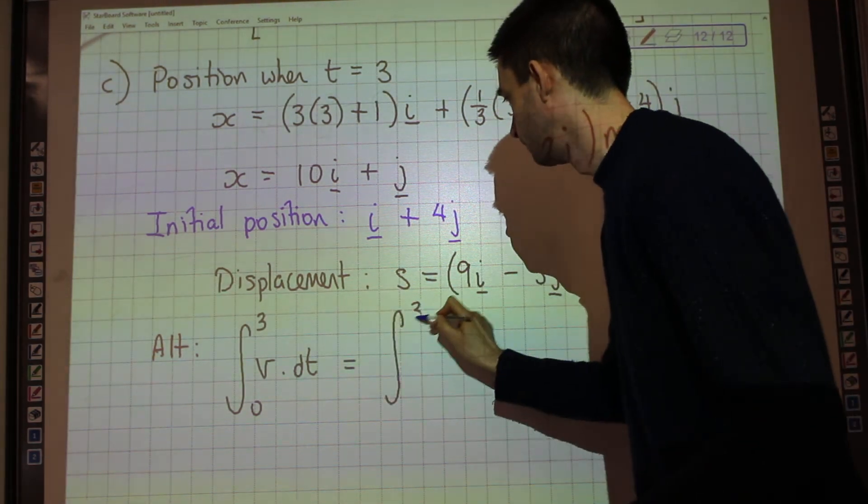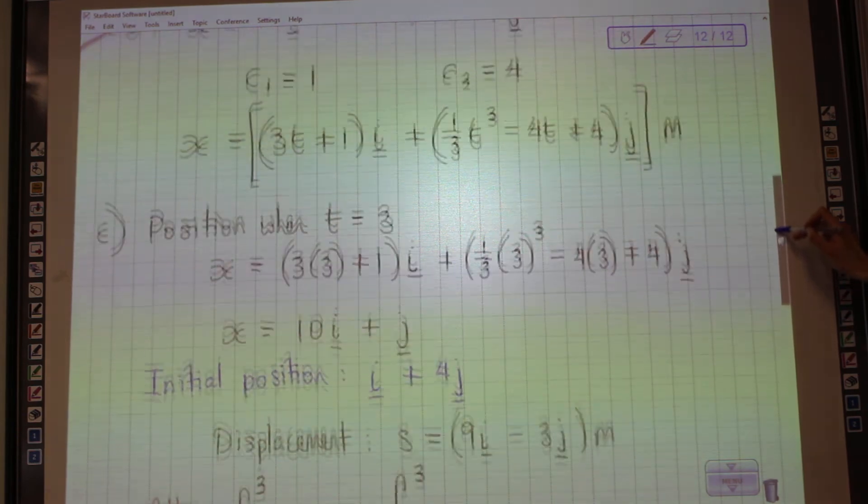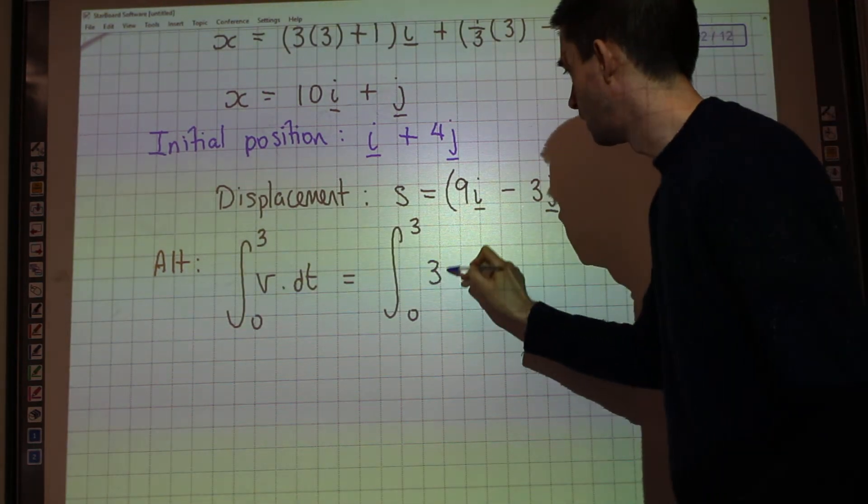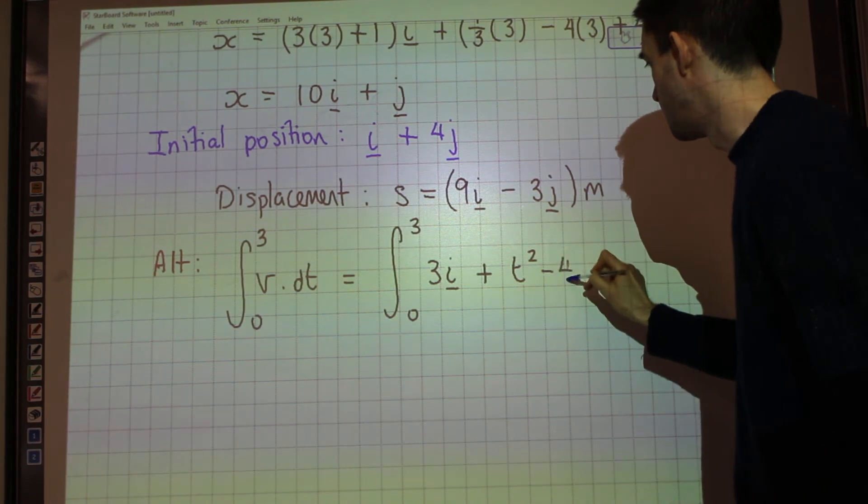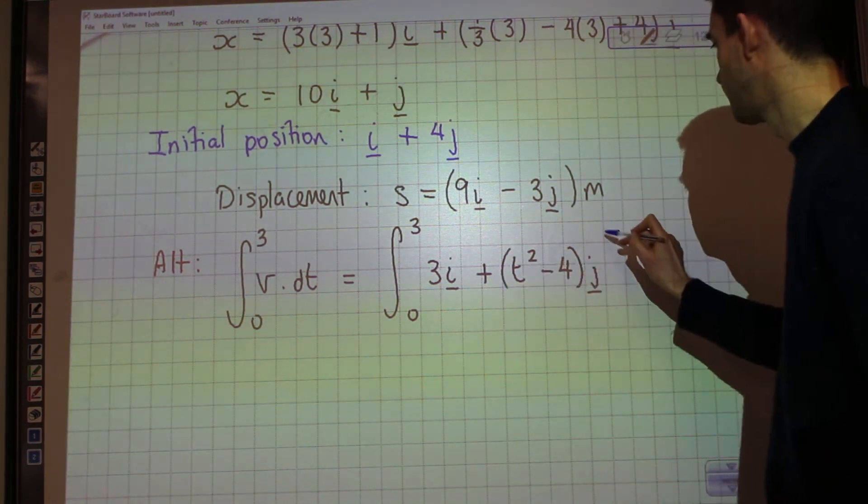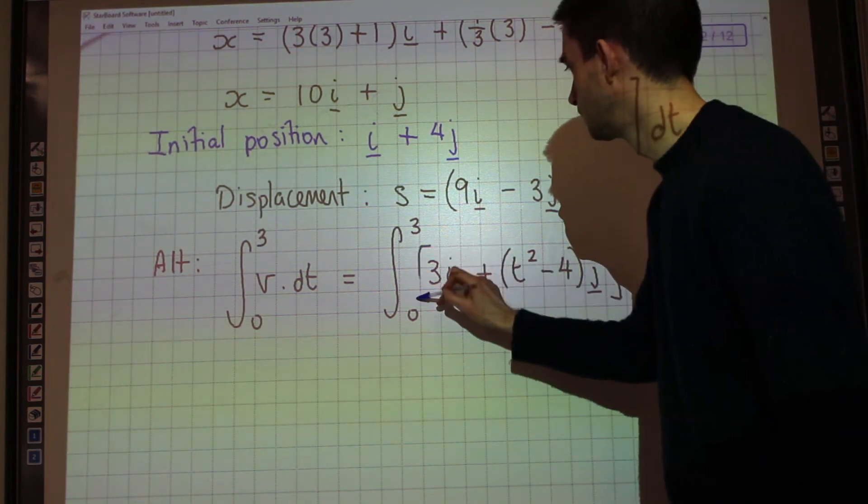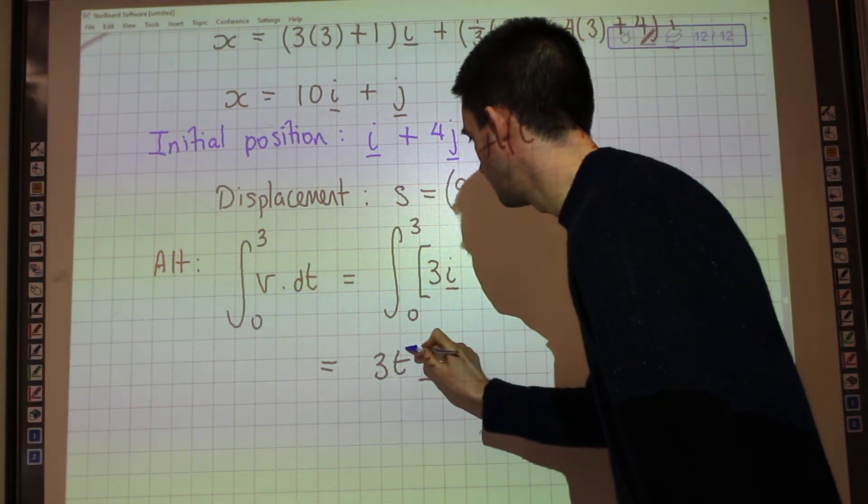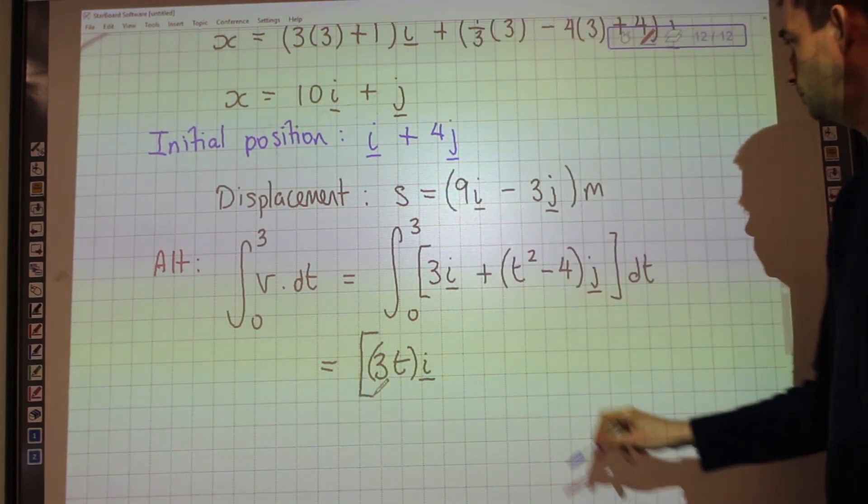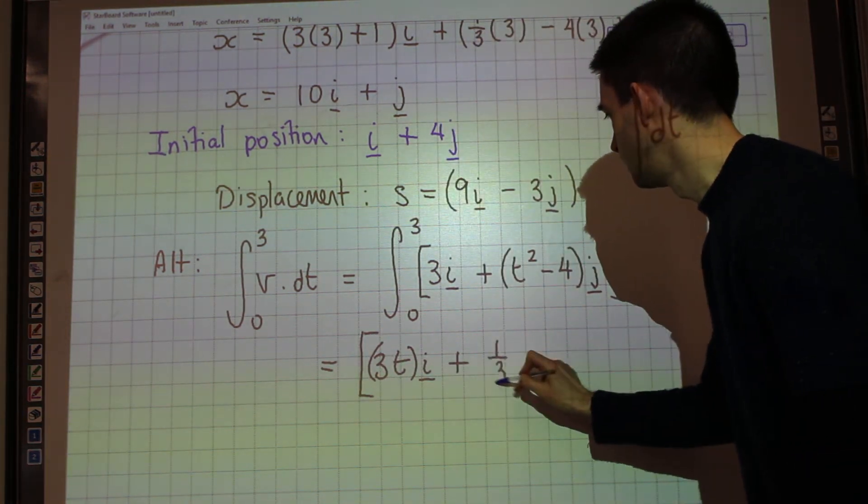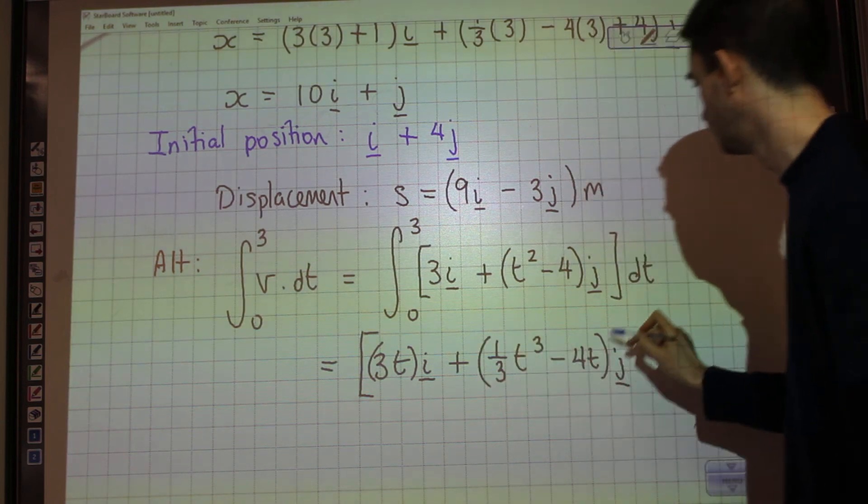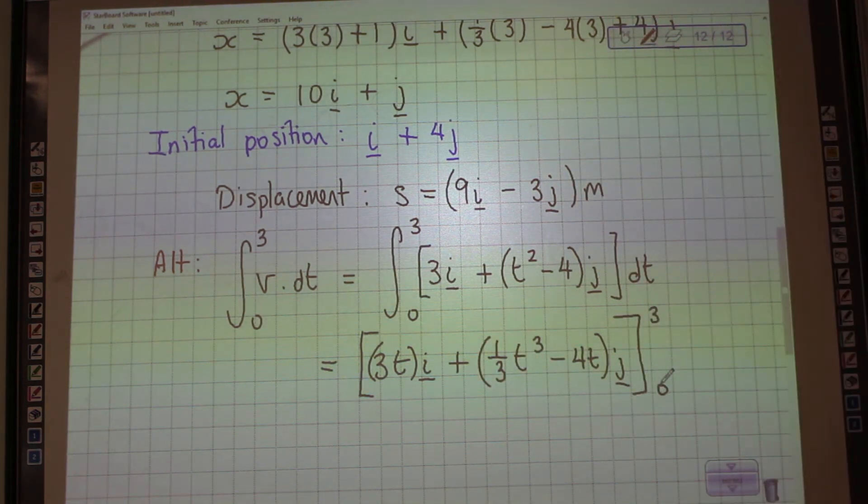Now, remember that our velocity vector was 3i plus t squared minus 4j. So, 3i plus t squared minus 4j. And we're doing that with respect to t. So, we're going to get 3ti plus 1 third t cubed minus 4t j between 3 and 0. And you probably recognise quite a lot of what's appearing on screen at the moment.